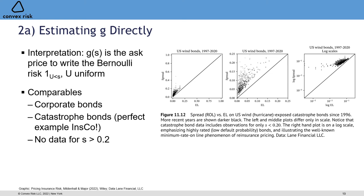Catastrophe bond pricing data shows expected loss on the x-axis and spread paid (analogous to g(s)) on the y-axis. The log-log scale plot suggests a minimum rate-on-line effect. The middle plot zooms in to s between zero and 0.25. The big problem is there's no data for s greater than about 0.2 — nothing in the equity range — so we can't point to an appropriate return for, say, a 50-50 probability of loss.